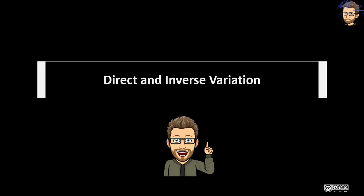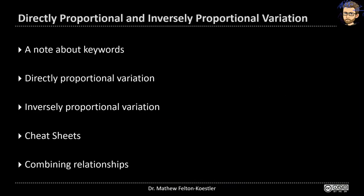We're going to talk about direct and inverse variation. I'm going to start with a quick note about keywords, then talk about some examples that are directly proportional variation, some that involve inversely proportional variation. I'm going to go over a cheat sheet at the end, and then briefly talk about how these relationships can be combined.